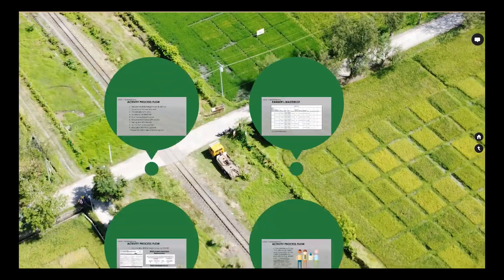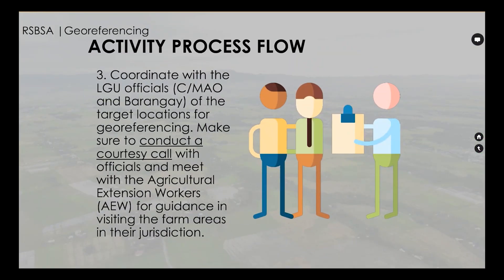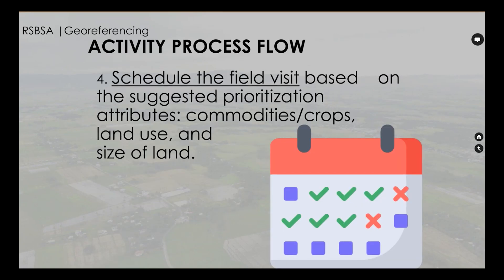Activity process flow number three: coordinate with the LGU officials — C/MAO and Barangay — of the target locations for geo-referencing. Make sure to conduct a courtesy call with officials and meet with the Agricultural Extension Workers (AEW) for guidance in visiting the farm areas in their jurisdiction.